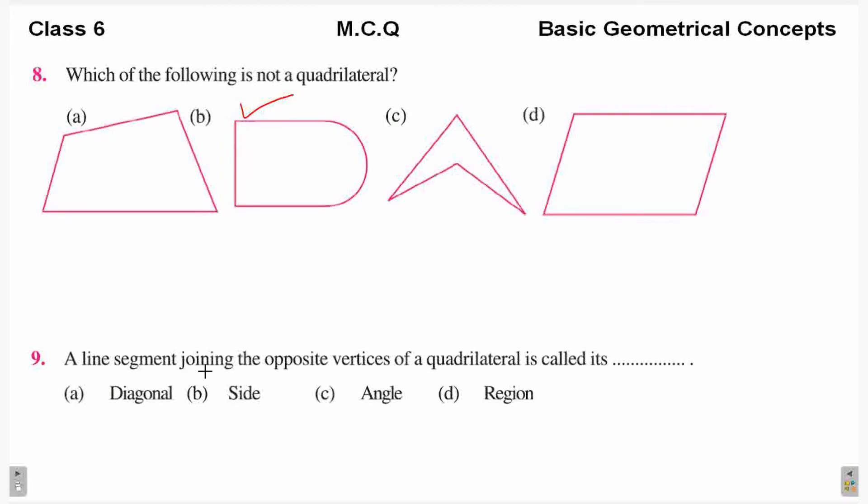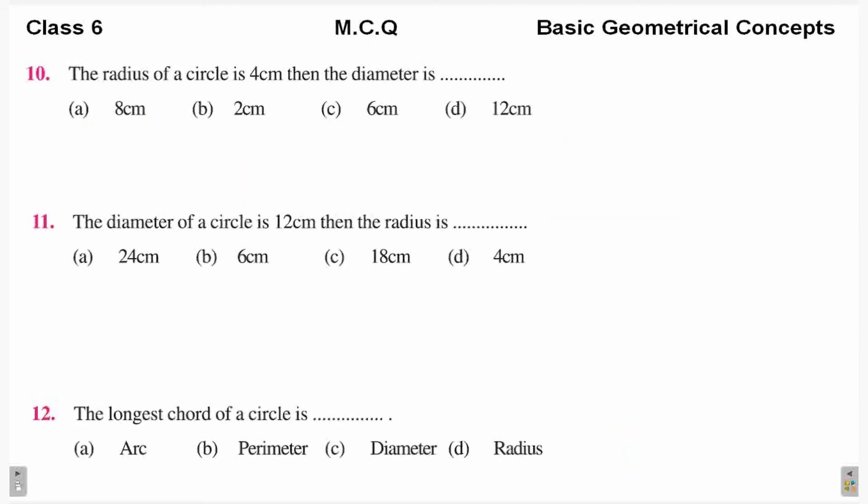Question 9: A line segment joining the opposite vertices of a quadrilateral is called its diagonal. So this is a quadrilateral. If radius is 8 centimeters, then diameter will also be in centimeters. So 8 centimeter times 2 equals 16 centimeters is your diameter.